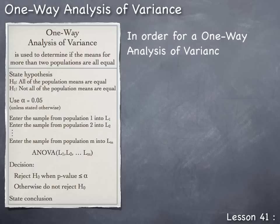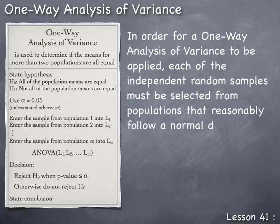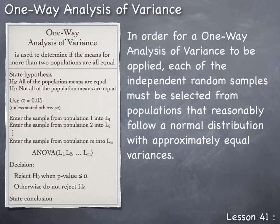In order for a one-way analysis of variance to be applied, each of the independent random samples must be selected from populations that reasonably follow a normal distribution with approximately equal variances. In order to obtain independent random samples, the appropriate sampling methods need to be applied. As for verifying the conditions of normality and equal variances, certain statistical analyses would be needed — but in this lesson we will not be learning those techniques. Therefore, whenever we conduct a one-way analysis of variance, we will do so under the assumption that the populations reasonably follow a normal distribution with approximately equal variances.